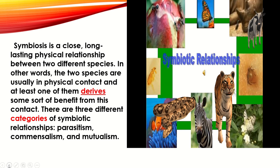So, what do you mean by symbiosis? Symbiosis is a close and long-lasting physical relationship between two different species — that is, two different organisms. In other words, the two species are usually in physical contact, and at least one of them derives some sort of benefit from this contact.